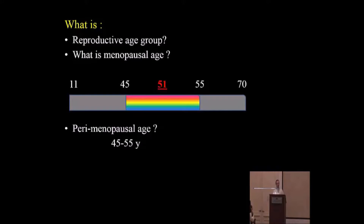What is perimenopause? The reproductive age group spans from menarche to menopause. Menopause usually occurs at 51.2 years — a worldwide figure. Any patient developing menopause after the age of 40 is considered normal, though menopause may happen as late as 55. The perimenopausal age range is roughly 45 to 55, so perimenopause may last up to 10 years. Patients start having abnormal bleeding symptoms any time before menopause; once it's menopause, it becomes postmenopausal bleeding, which is not the scope today.